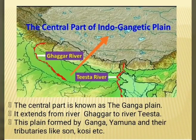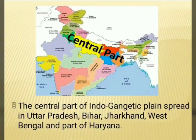The central part is known as the Ganga plain. It extends from river Ghaggar to river Tista. This plain was formed by Ganga, Yamuna and their tributaries like Son, Kosi, etc. The central part of the Indo-Gangetic Plain spreads in Uttar Pradesh, Bihar, Jharkhand, West Bengal and part of Haryana states.